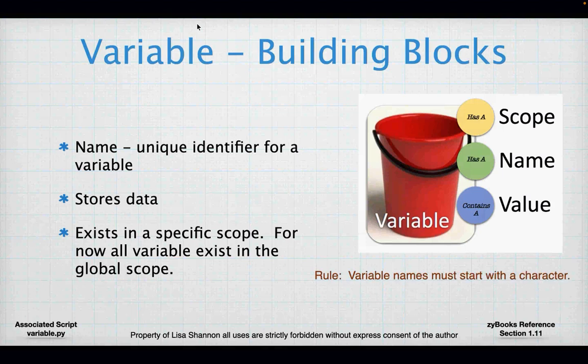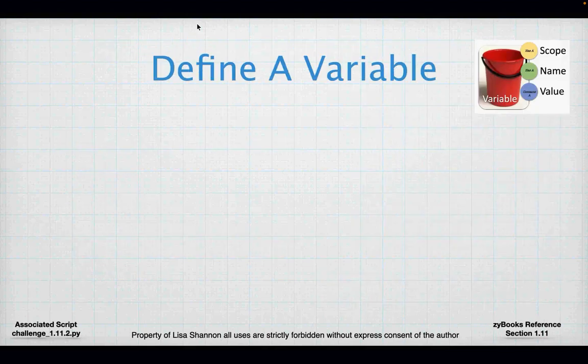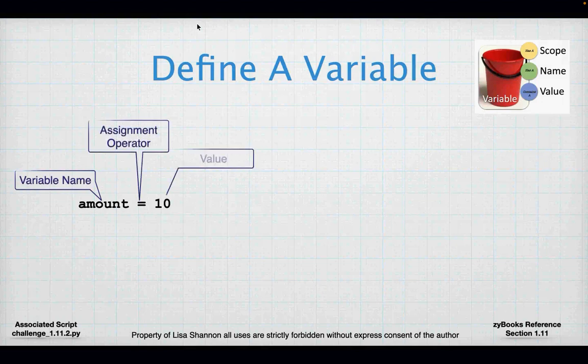Scope we'll begin to talk about in Module 3. Name could be something like Fred — there are certain naming conventions in Python. You can't use special symbols; the underscore is the only special character allowed in a variable name. You can use all letters and numbers, as long as the variable name starts with a letter. Variable names may not include spaces or special characters.